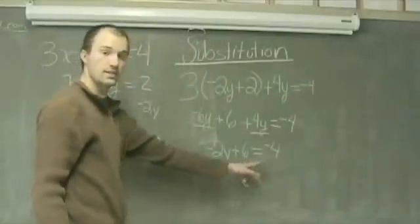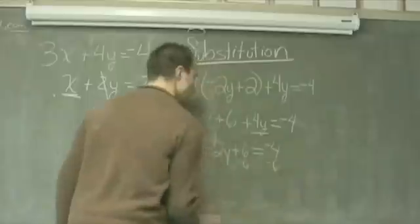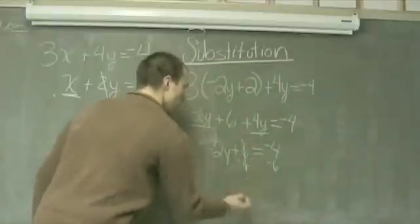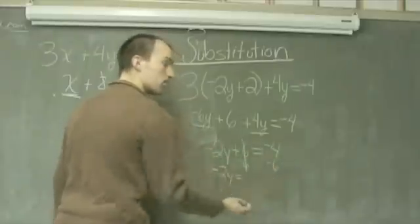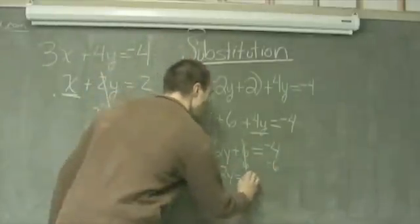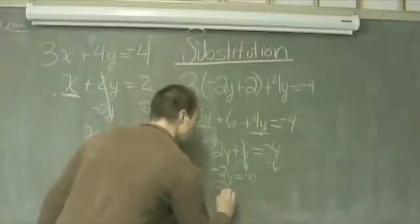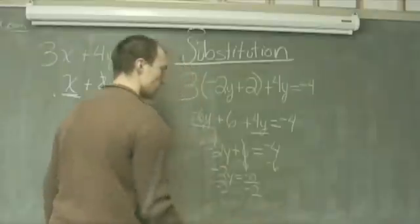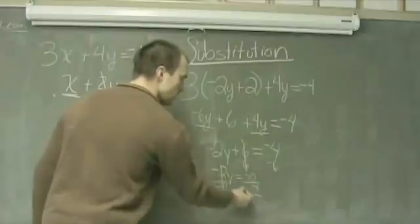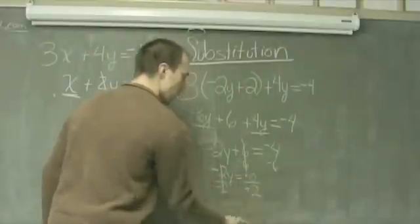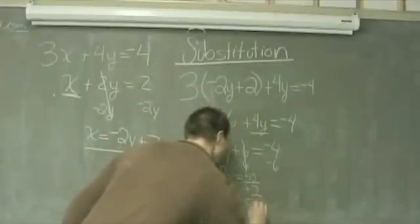I subtract 6 from both sides to eliminate the 6 on the left, leaving me with negative 2y equals negative 4 plus negative 6, or negative 10. Now we divide both sides by the coefficient of y, which is negative 2. Negative divided by negative becomes positive, and we find that y equals 5.